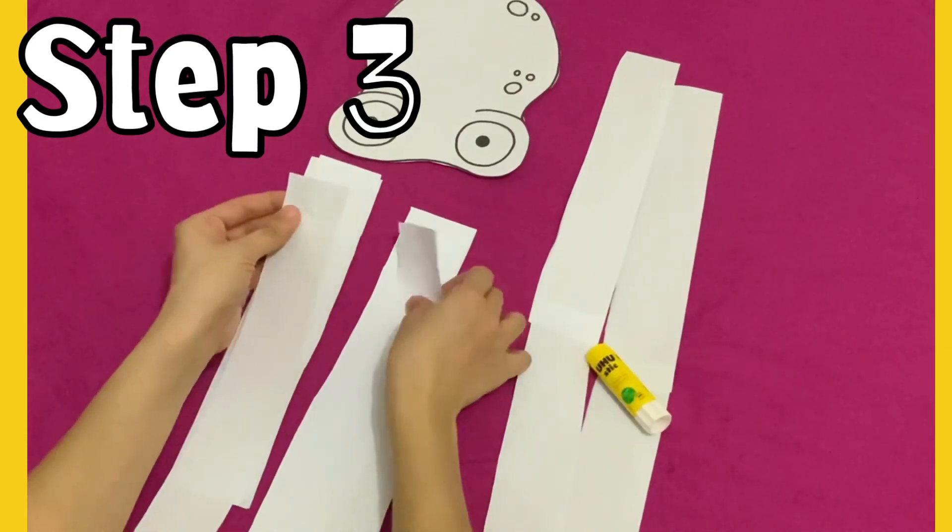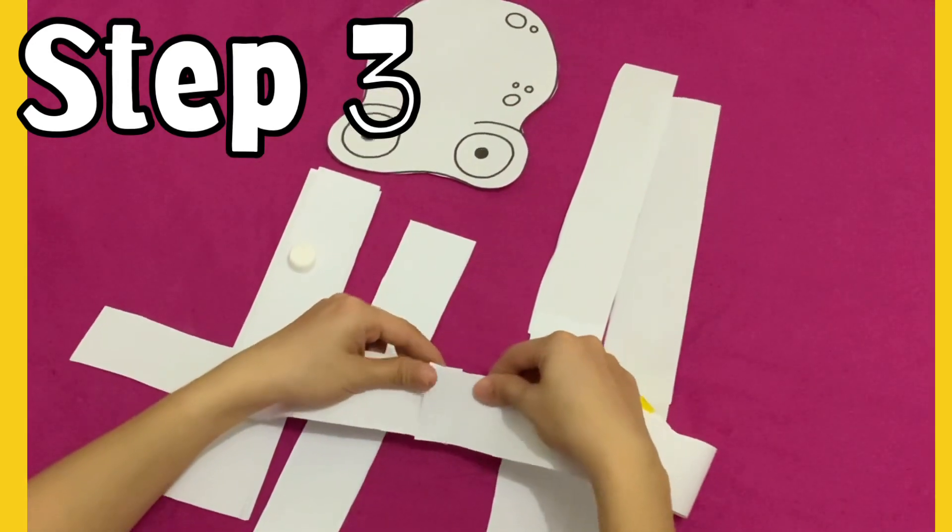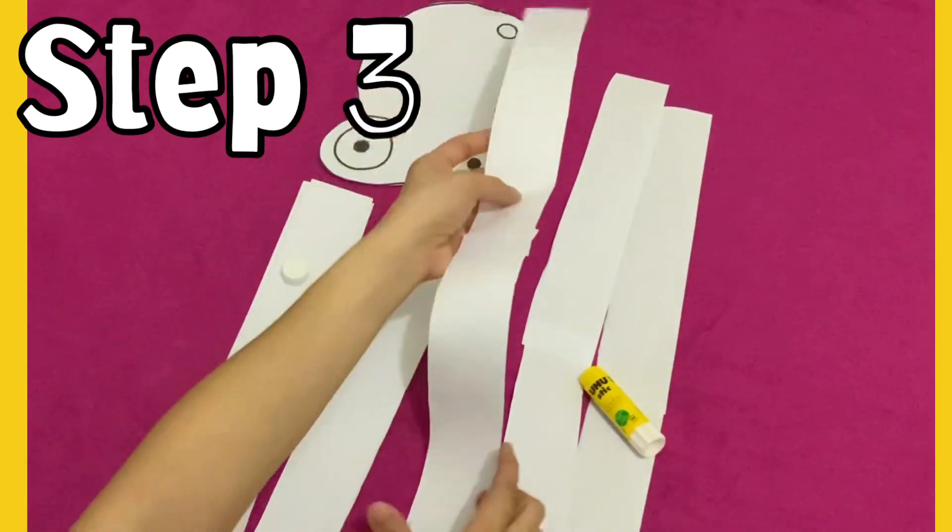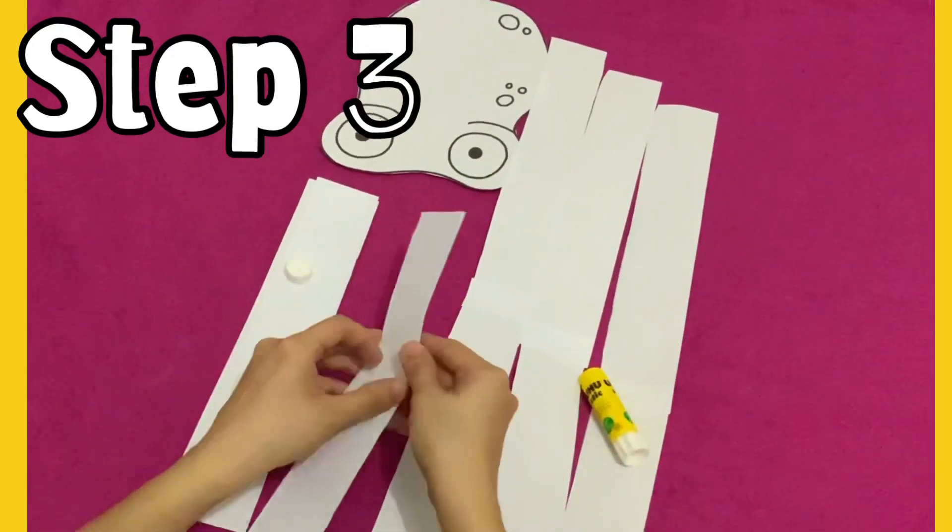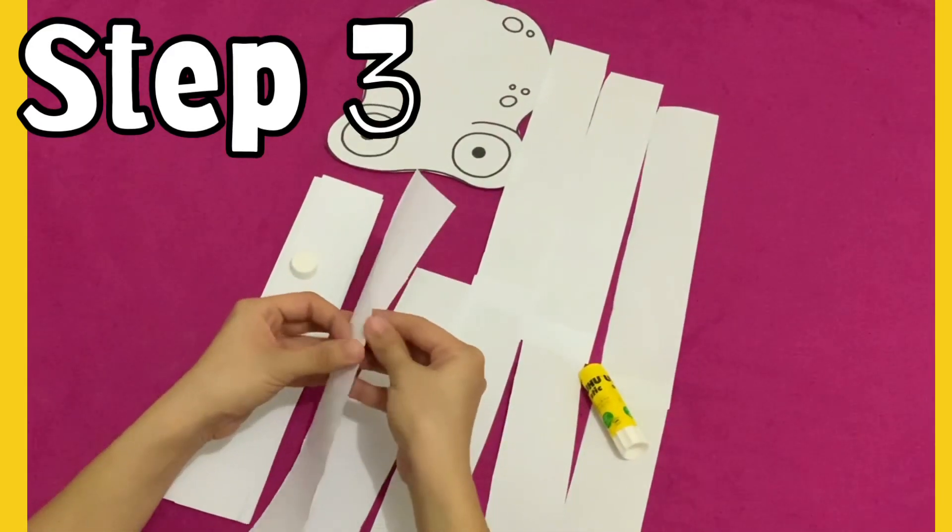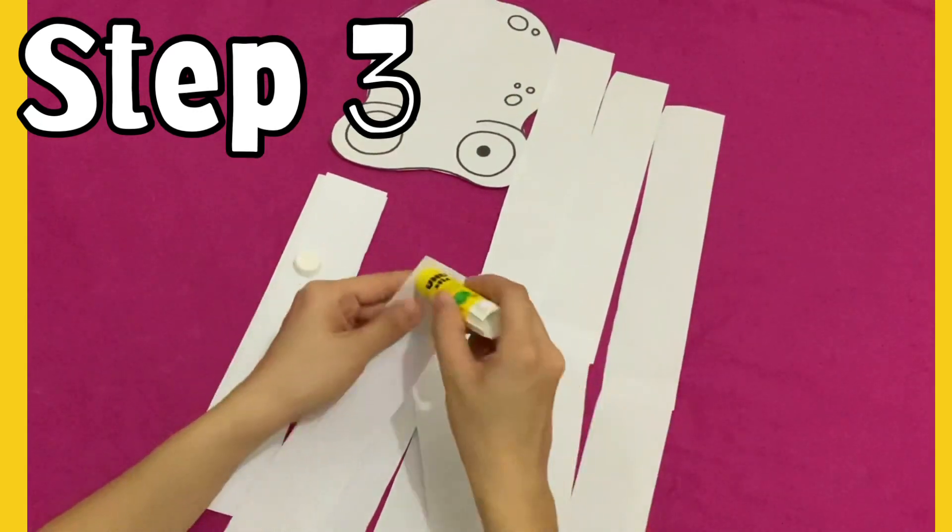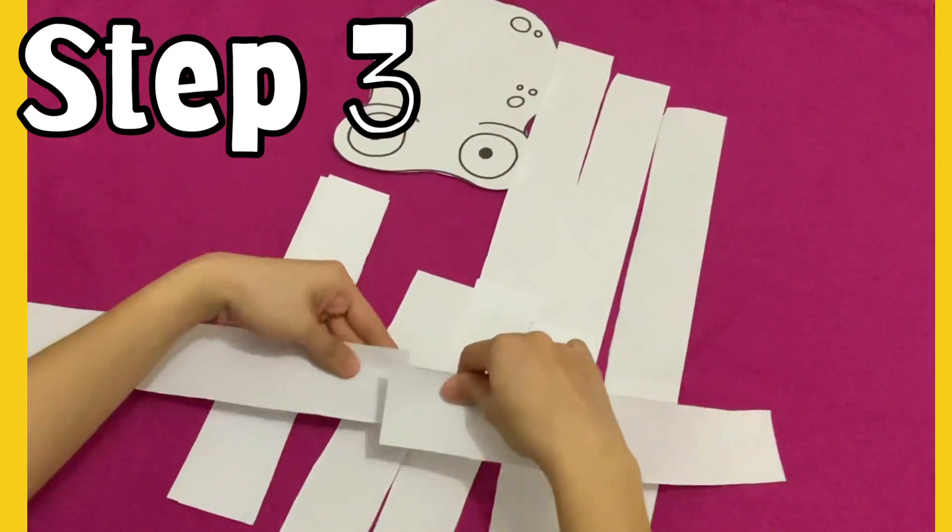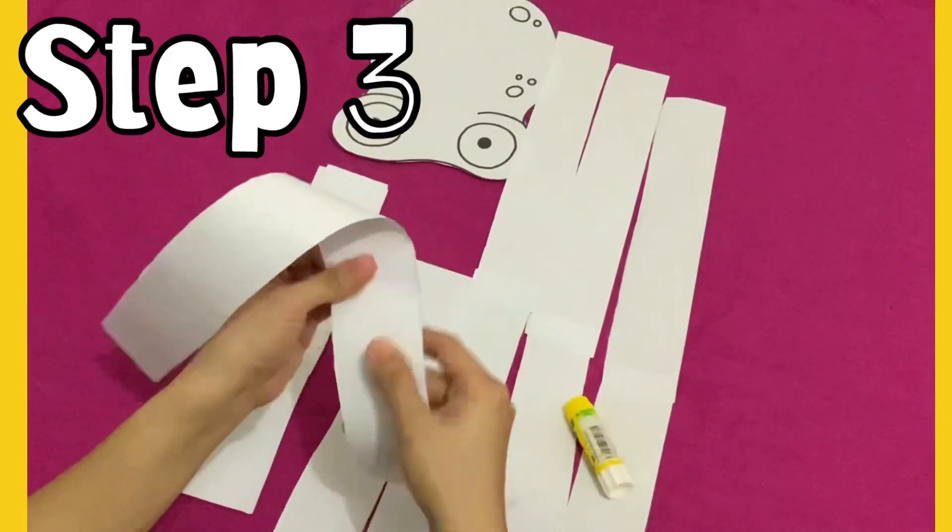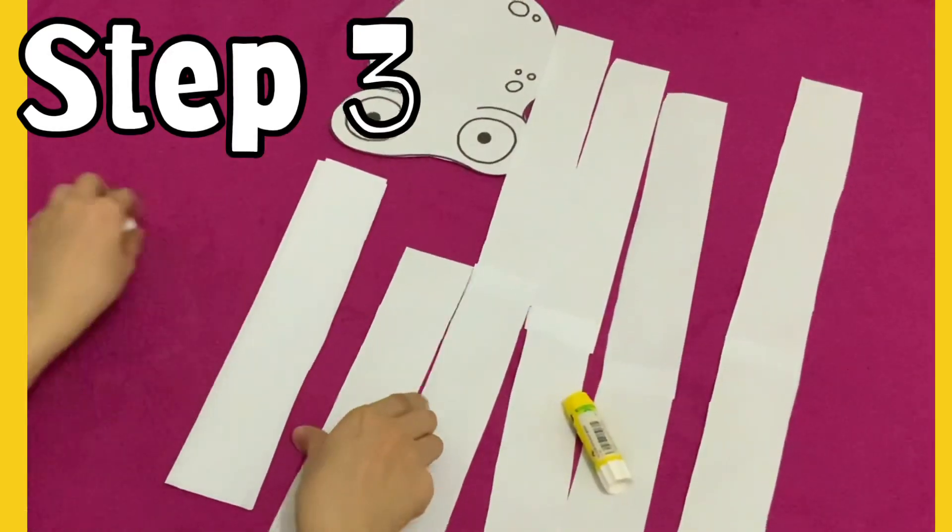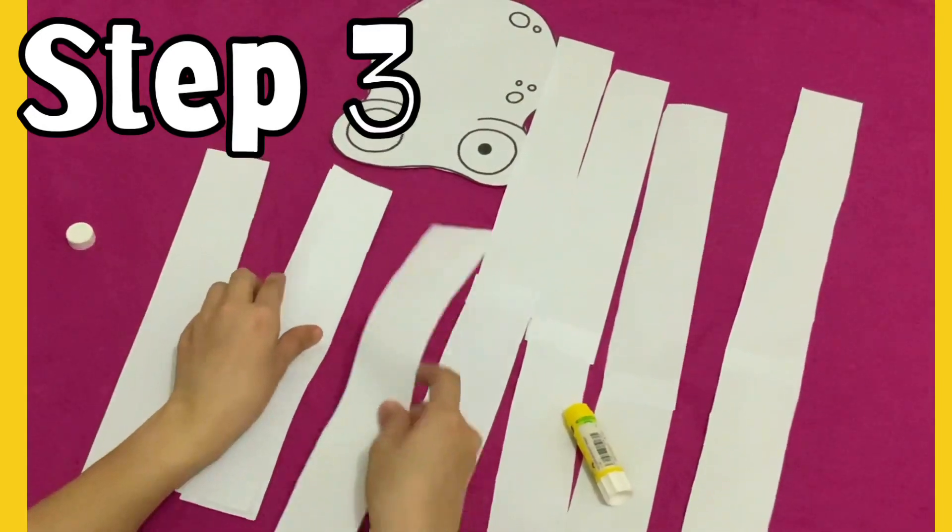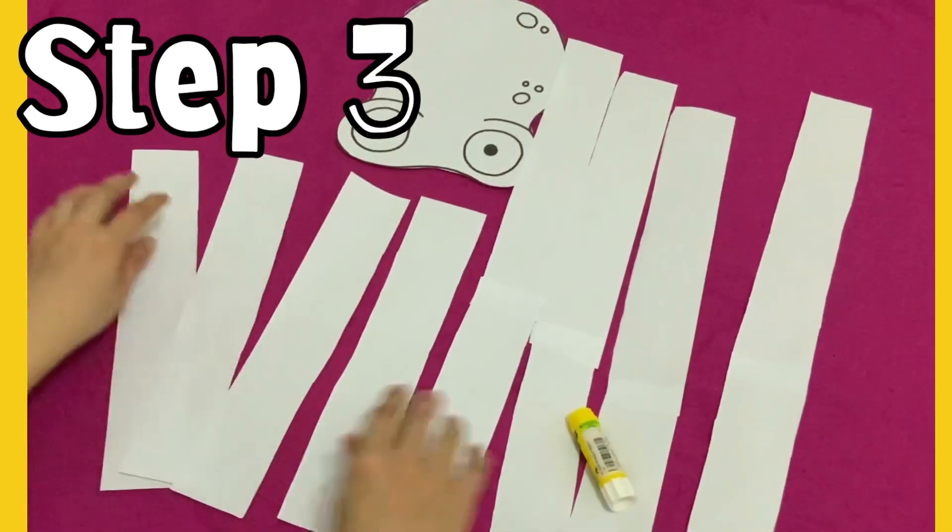So we already have two long tentacles. And this is the third one. Let's make the last one. Remember, we should only make four long tentacles. The others will be our short tentacles. There you go. We have long and short tentacles.